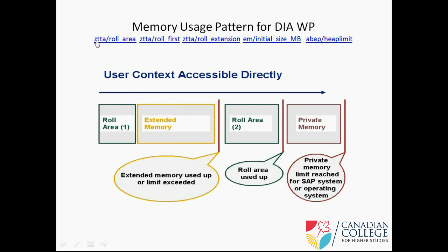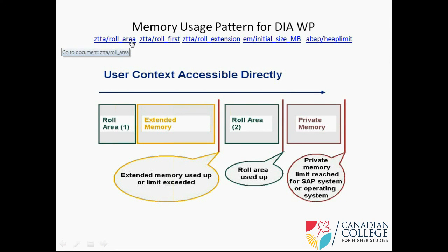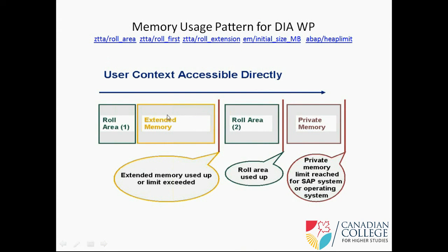This is the parameter to set the value of role area - this plus this combined. Role extension is the amount of extended memory this work process can use - that is role extension. Extended memory initial size is this parameter. Above heap limit is the maximum heap memory size.